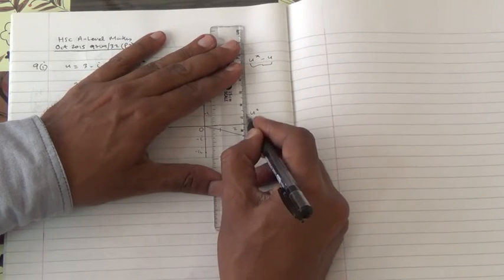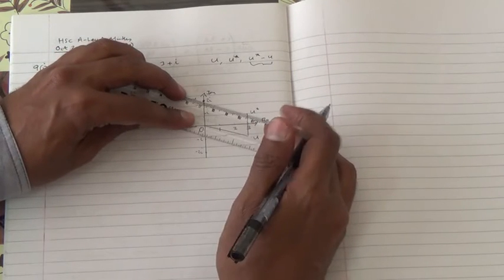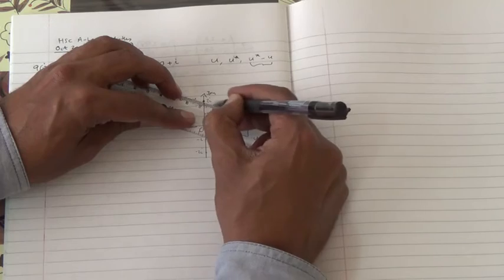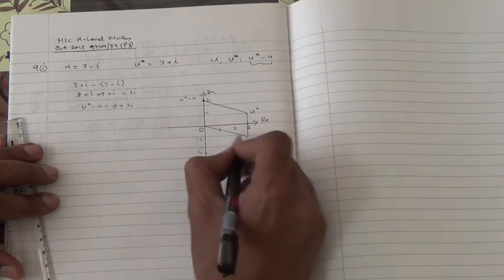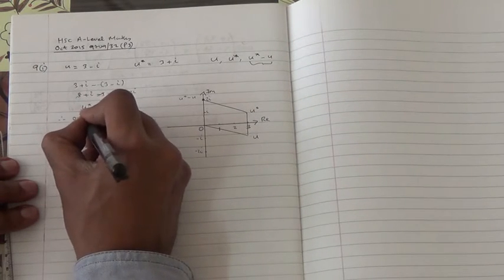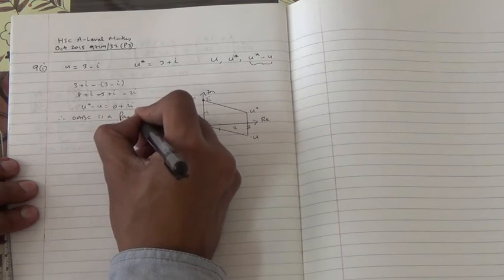So let's draw the quadrilateral. So we're going to join the points with the lines here. And it looks like we have... So this is one, two, one, two. It's a parallelogram. Therefore, OABC is a parallelogram.